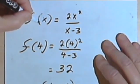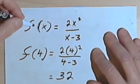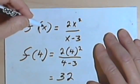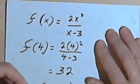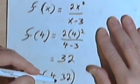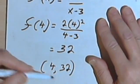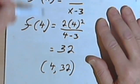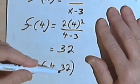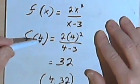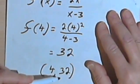And that would tell me that in my original general function, f of x equals 2x squared over x minus 3, 4 comma 32 would be a solution to that, and it would also be a point on the graph. So you can take what you got out of a function and turn it into an ordered pair.